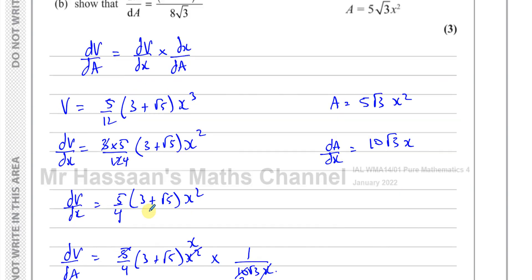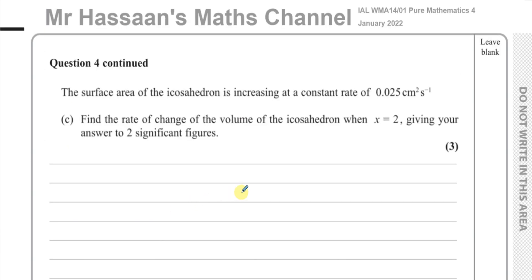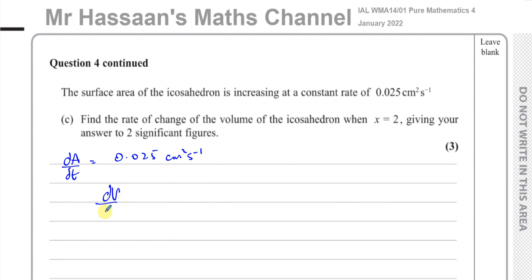For part c, the surface area of the icosahedron is increasing at a constant rate of 0.025 cm² per second, so dA/dt equals 0.025 cm² per second. We need to find the rate of change of volume, dV/dt, when x equals 2. To get dV/dt from dA/dt, we multiply by dV/dA using the chain rule.